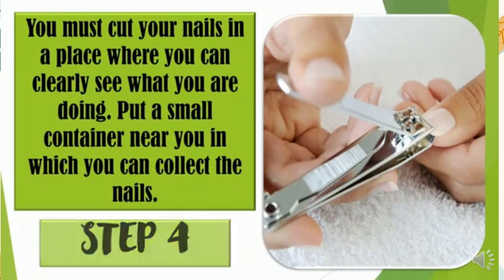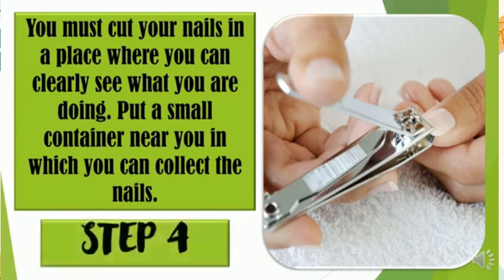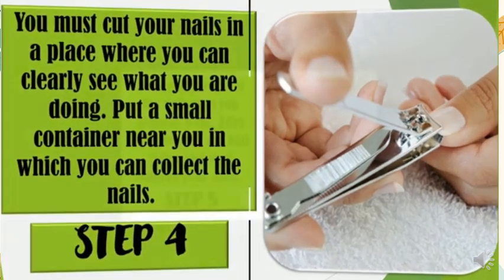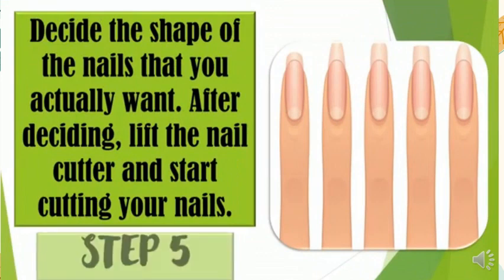Step 4 — you must cut your nails in a place where you can clearly see what you are doing. Put a small container near you in which you can collect the nail clippings. Step 5 — decide the shape of the nails that you actually want. After deciding, lift the nail cutter and start cutting your nails.